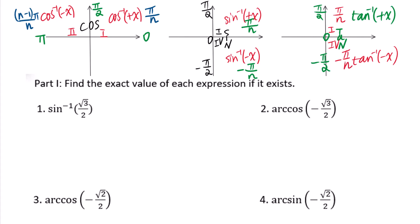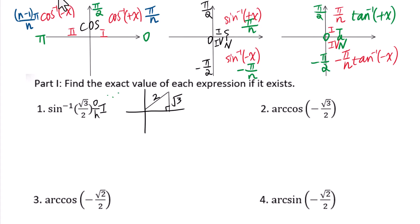Question 1: inverse sine of square root of 3 over 2. Since square root of 3 over 2 is positive, go to the first quadrant. Sine is opposite over hypotenuse — we get square root of 3 over 2, which corresponds to 60 degrees, so the answer equals pi over 3.